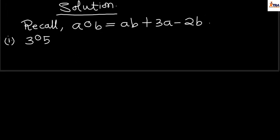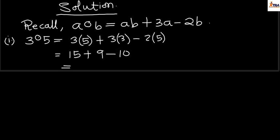All we will be doing is substituting our a for 3 and our b for 5. So in this case, I have 3 times 5 plus 3 times 3, minus 2 times 5. Solving this, I get 15 plus 9 minus 10, which gives me a sum total of 14. That means that 3○5 will give me 14.